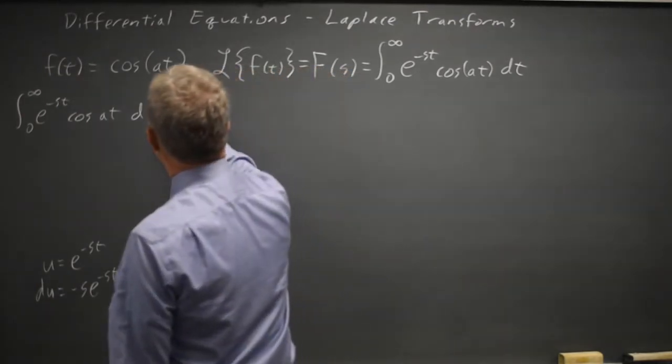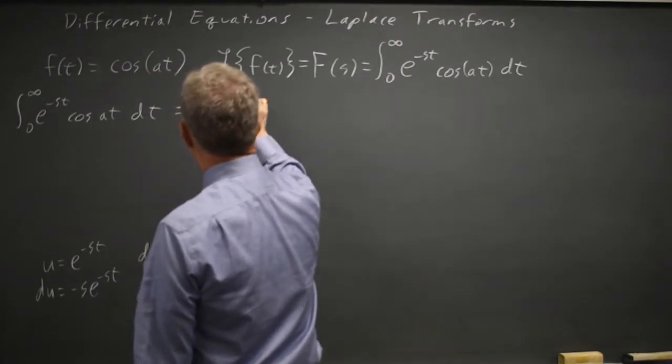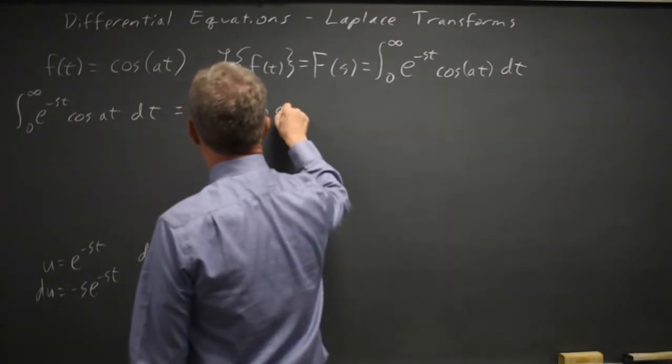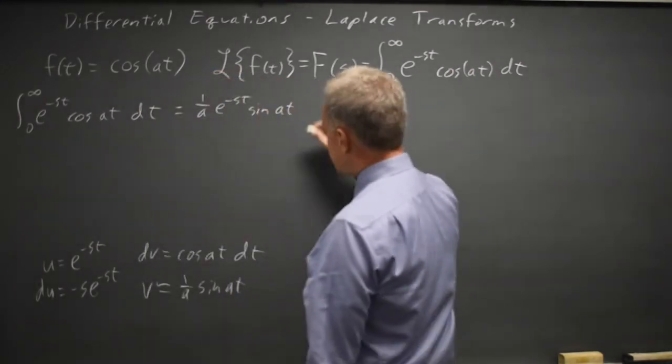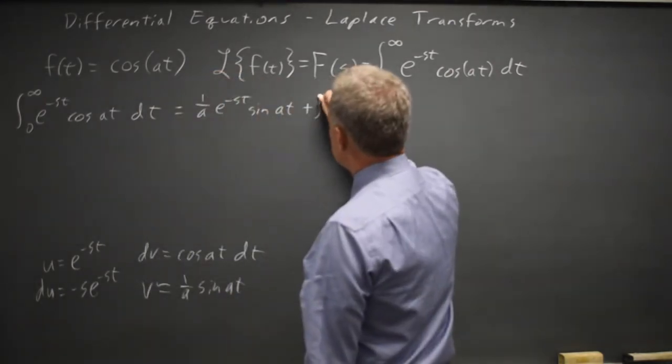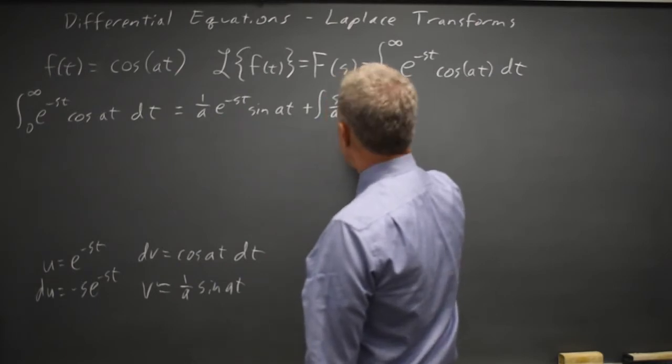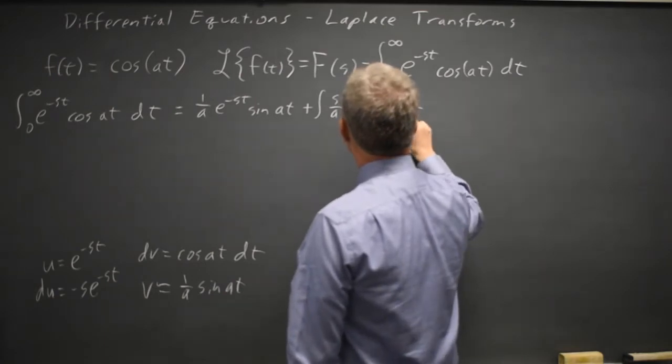So this integral is uv, 1 over a, e to the negative s t sine a t, minus the integral of v du, minus the negative is plus, s over a, e to negative s t, sine a t, dt.